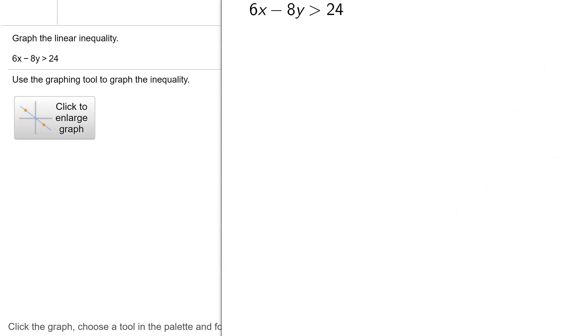So here's some scratch paper with my inequality. Notice it has a greater than, not a greater than or equal to. So I'm going to graph the line 6x minus 8y equals 24, but I have to use a dashed line, not a solid line.